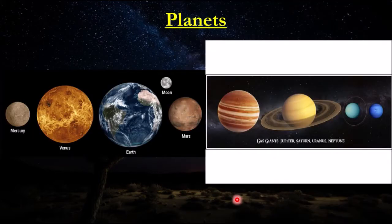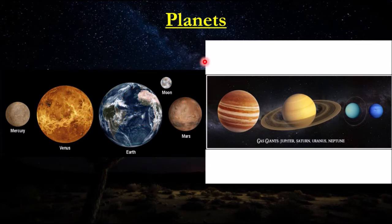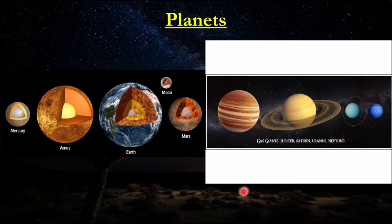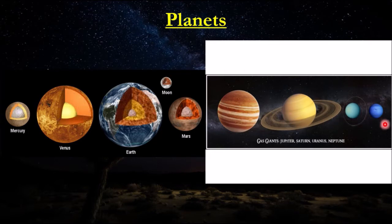To start, we're going to talk about planets. We can actually split the planets into two categories, which we'll talk about later on. You can see these two categories here. The planets in our solar system are Mercury, Venus, Earth, Mars, Jupiter, Saturn, Uranus, and Neptune.